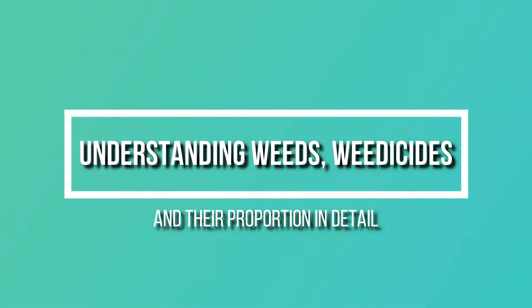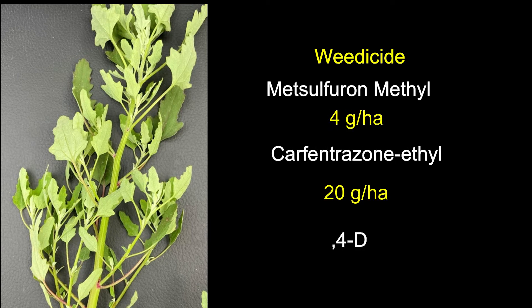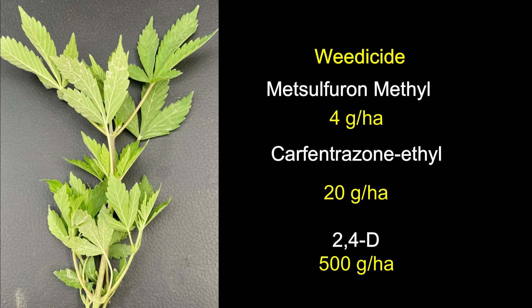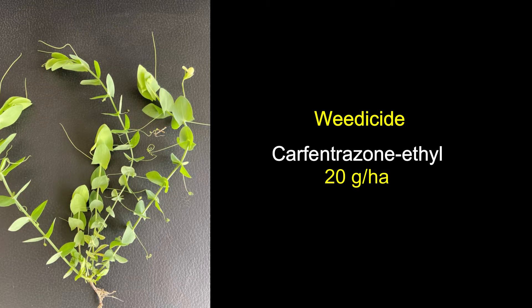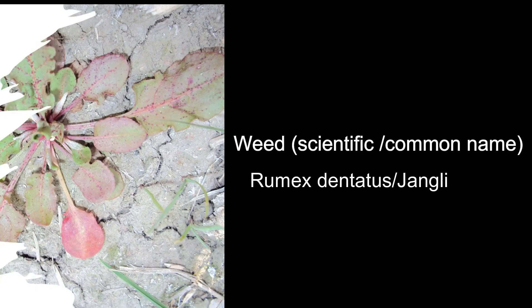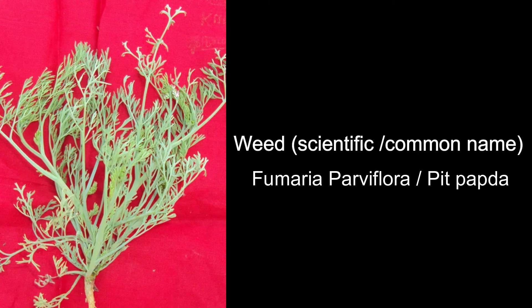Broadleaf weeds in wheat - scientific and common names with recommended herbicides: Chenopodium album (Bathua) - metsulfuron-methyl 4 g/ha, carfentrazone-ethyl 20 g/ha, 2,4-D 500 g/ha. Cannabis sativa (Bhang) - metsulfuron-methyl 4 g/ha, carfentrazone-ethyl 20 g/ha, 2,4-D 500 g/ha.